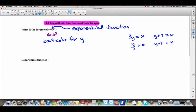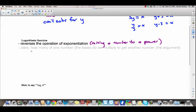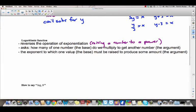The opposite operation of an exponent is a logarithm. A logarithm reverses the operation of exponentiation. And what exponentiation is, is when you raise a number to a power. Exponentiation is raising a number to a power. And a logarithm reverses that operation.